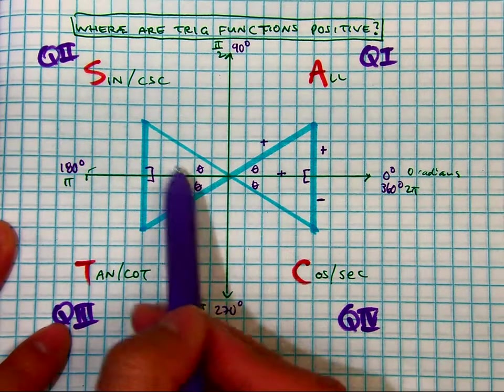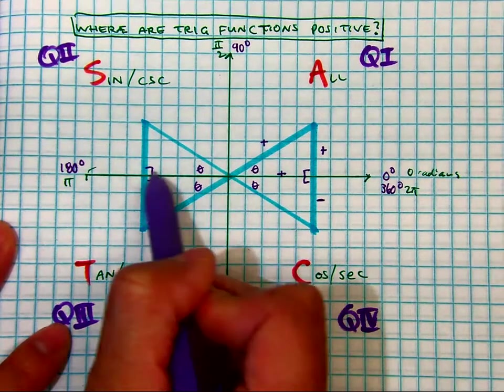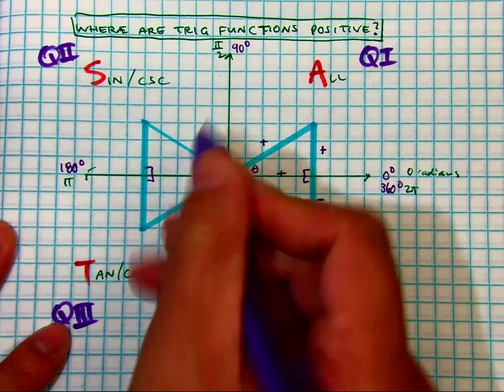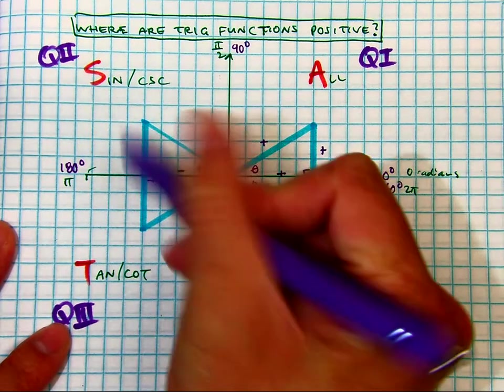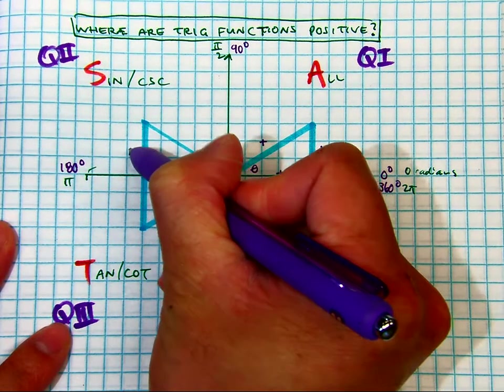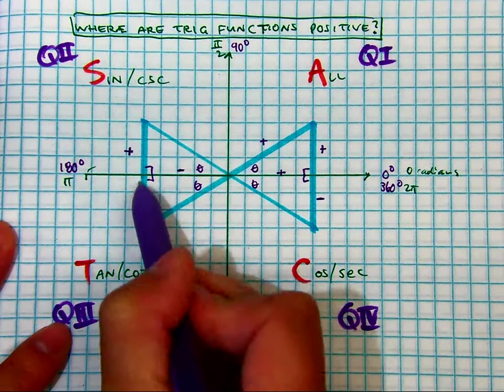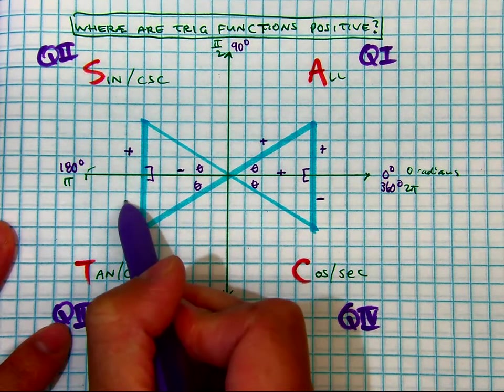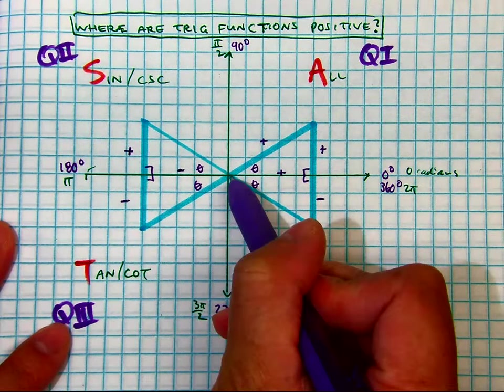If you go into quadrants 2 and 4, your x value is going to be negative. If you're going up on the y axis, that's positive. If you ever go down on the y values, it's negative, and radius will always be positive.